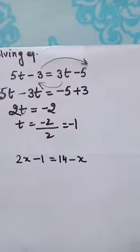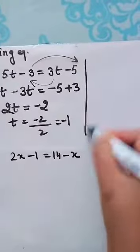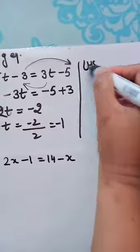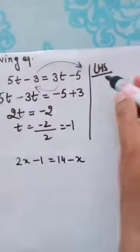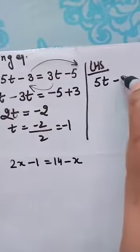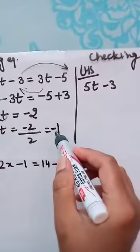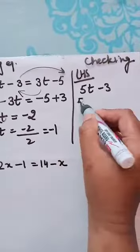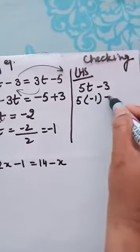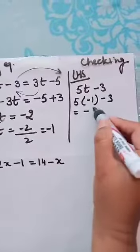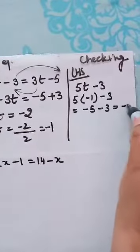So, now would you like to check whether whatever I have found is correct or not? Let us see LHS. What is LHS? 5t minus 3. This is for checking. What is the value of t? T is equal to minus 1. So I will put t is equal to minus 1 here minus 3. So it becomes minus 5 minus 3, so it is minus 8.